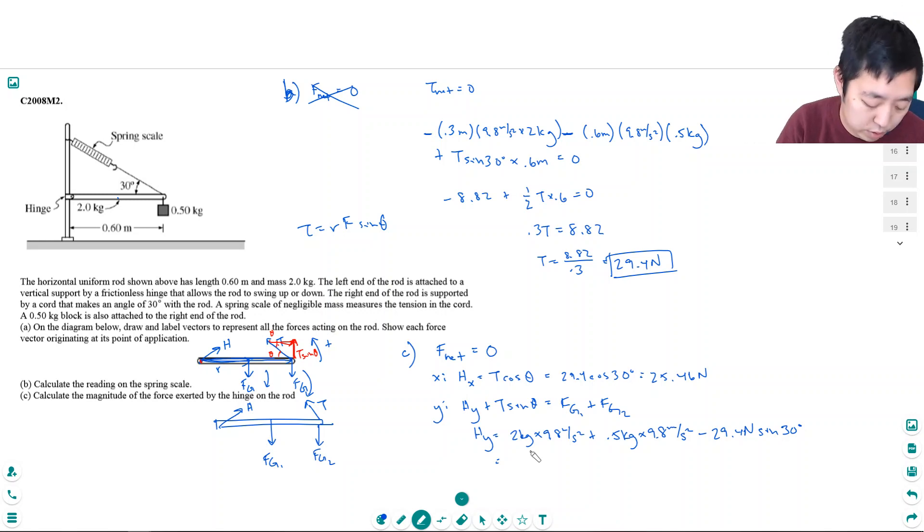And so h sub y is 2 times 9.8 plus 0.5 times 9.8 minus 29.4 times one half. That's equal to 9.8 newtons.